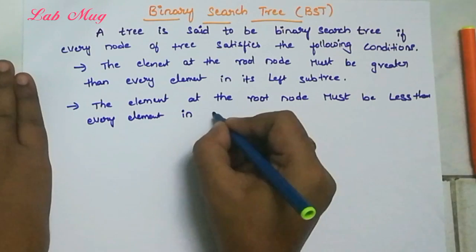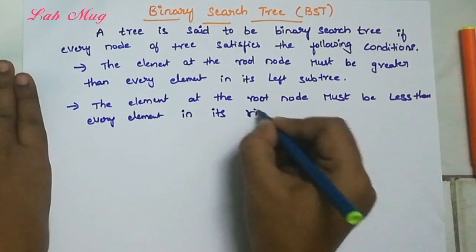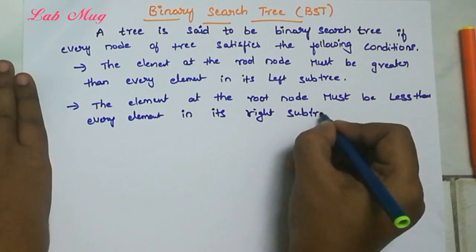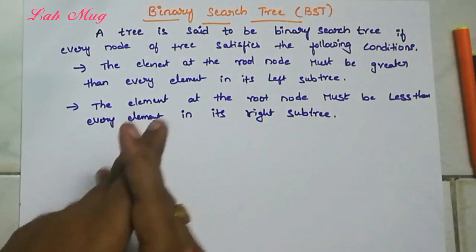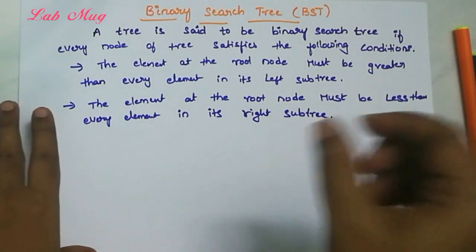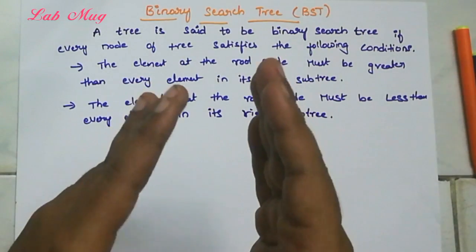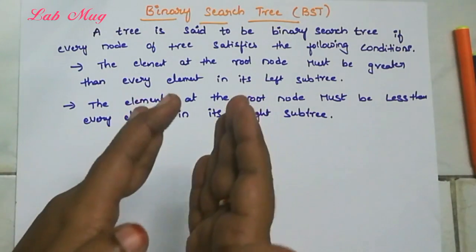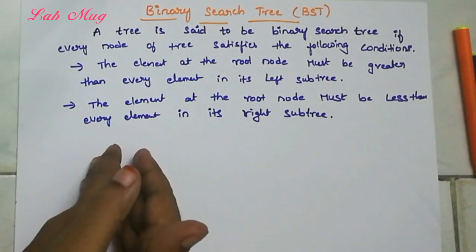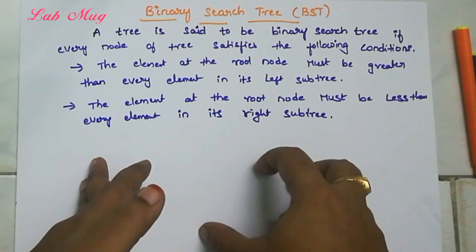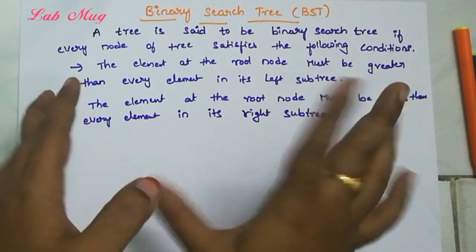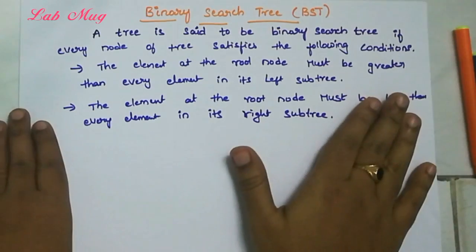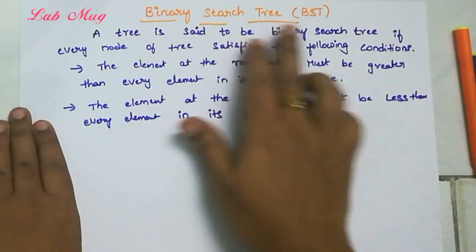In its right sub tree. Every binary tree is a collection of nodes — every node has a left element or a right sub tree with a smaller element. That is the binary search tree. If these conditions are satisfied by the tree, we call it a binary search tree.